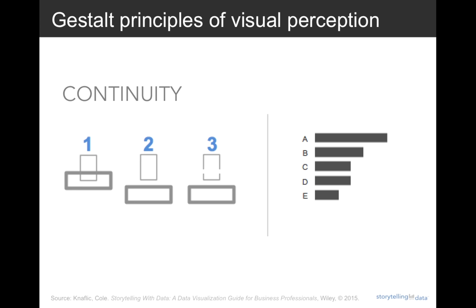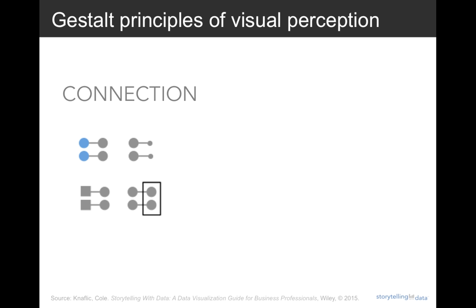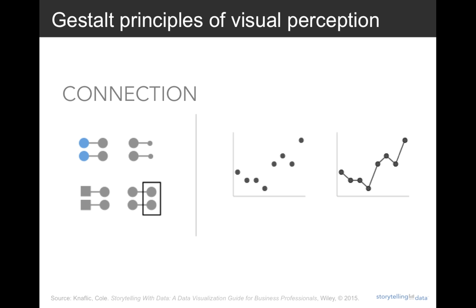Let's talk about one more principle — the connective property. It has a stronger associative value than similar color, similar size, or similar shape. It's not typically stronger than enclosure, but that relationship depends on the thickness and darkness of lines, so you can play with it to get the right sense of visual hierarchy. One way we use the connective property very frequently is in line graphs, to help our eyes make sense of what is sometimes a whole lot of data.